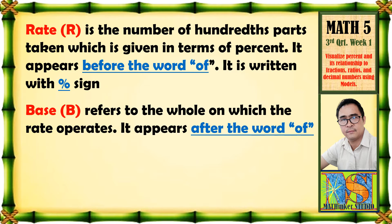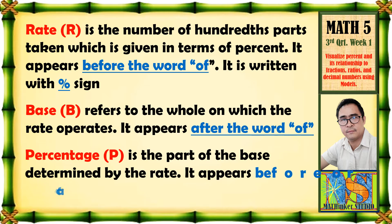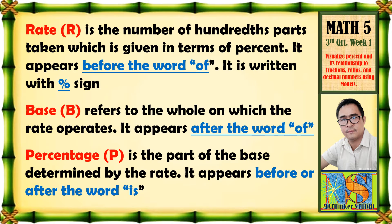Tandaan — pagkatapos ng salitang 'of.' Ang percentage naman ay the part of the base determined by rate. It appears before or after the word 'is.' So, ang percentage ay kinukuha natin sa base depende sa rate nito, at nakikita ito sa unahan o sa hulihan ng salitang 'is.'